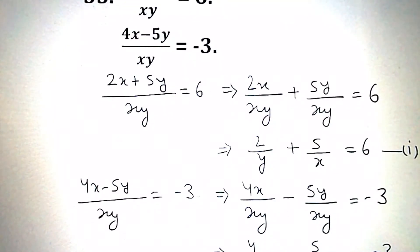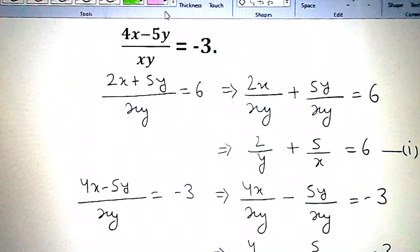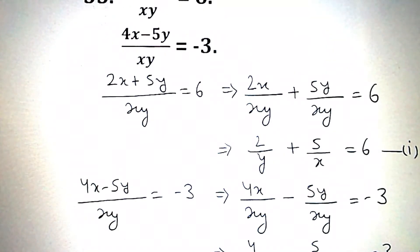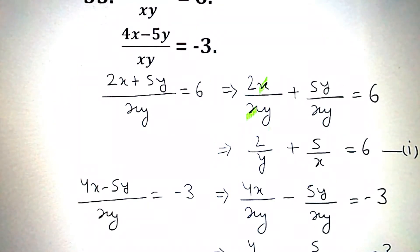The first equation can be written as (2x + 5y)/xy = 6, that is, 2x/xy plus 5y/xy equals 6. So xx will get cancelled, giving 2/y, and yy will get cancelled, giving 5/x equals 6. That is equation number 1.